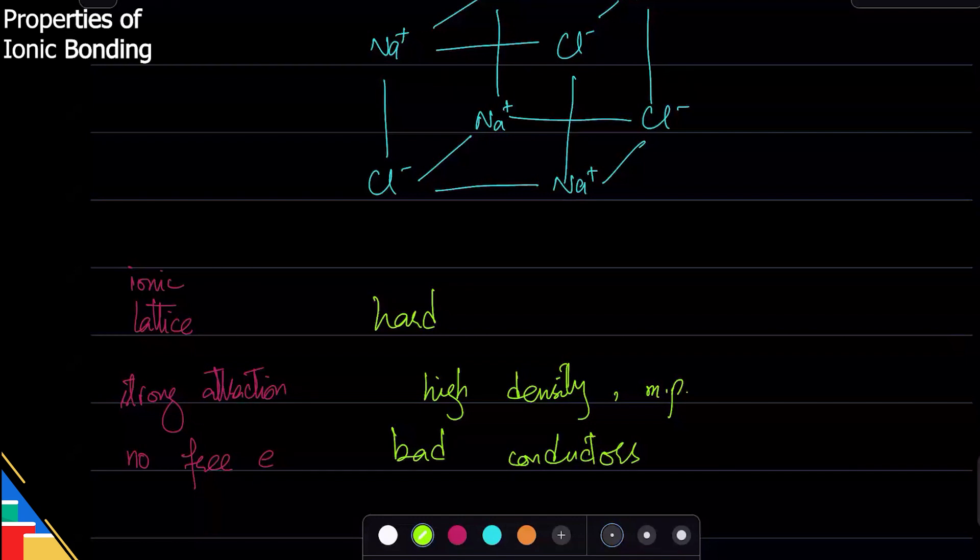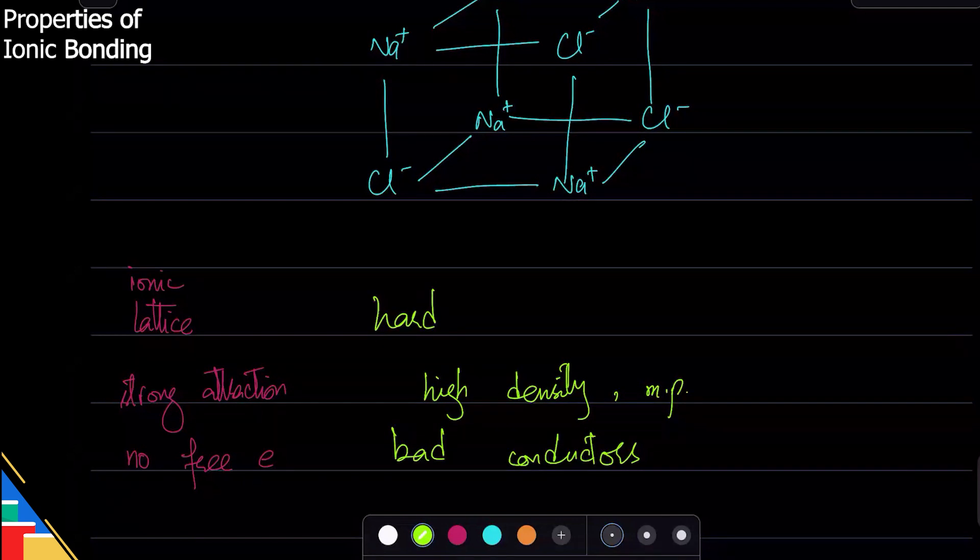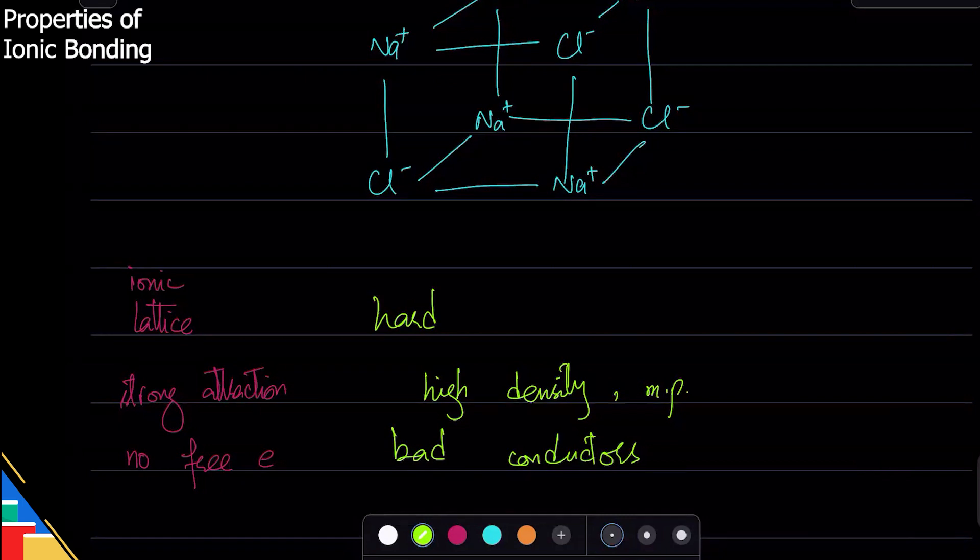Why is an ionic compound hard? Because it has an ionic lattice and ions are fixed in their place. Why do ionic compounds have high density? Because they have strong force of attraction between cation and anion. Why does solid sodium chloride not conduct electricity? Because it's a bad conductor - there are no free electrons.